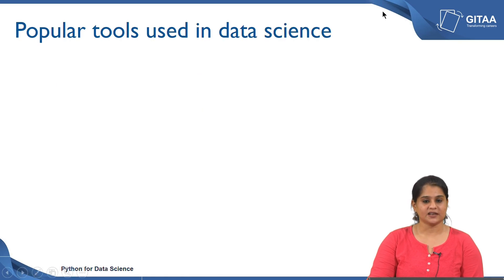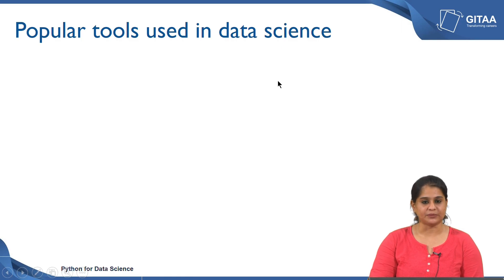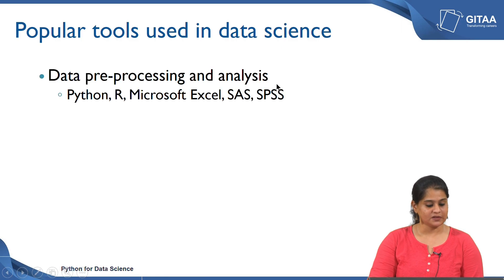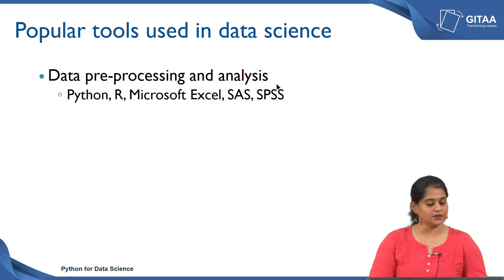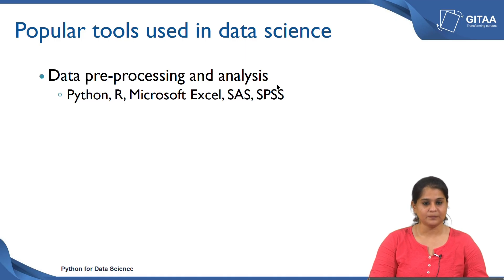Currently there are many tools being used in data science, and these tools can be bucketed into three categories. The first category is data preprocessing and analysis. Tools and software that fall under this category are Python, R, MS Excel, SAS, and SPSS.